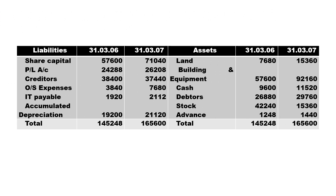Now looking at the balance sheet: share capital compared to last year shows an increase of thirteen thousand four forty, so it will come in finance activity. The P&L account is completely ignored because we have taken interim profit of eleven thousand five hundred and twenty. Ignore the profit and loss account. For creditors, there is a decrease of nine hundred and sixty.